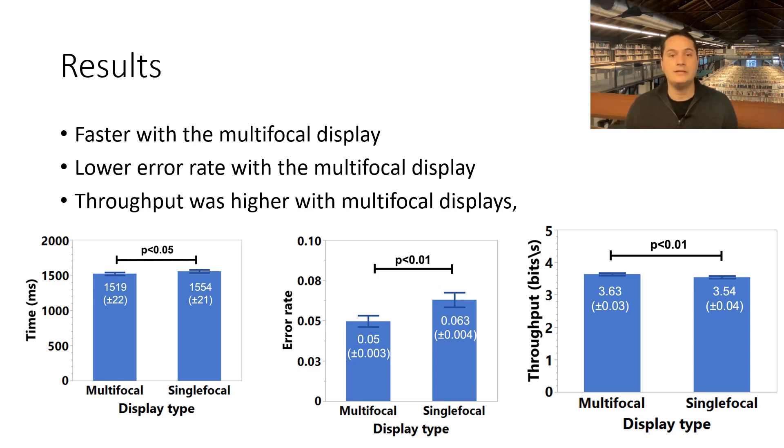The error rate was significantly different for the display type and index of difficulty. The subjects had lower error rate with the multifocal display than the single-focal. Throughput results were significant for display type, AR-VR, movement direction, and index of difficulty. Participants' throughput was higher with multifocal displays, for AR, and for movements along the view direction. There was also interaction between display type and axis, and we observed higher throughput with the multifocal display for depth movements.